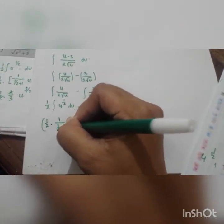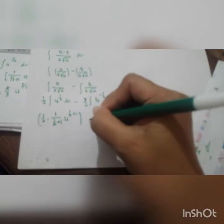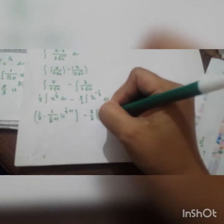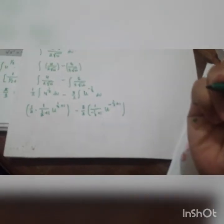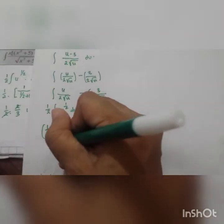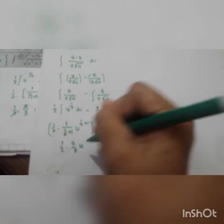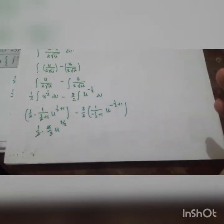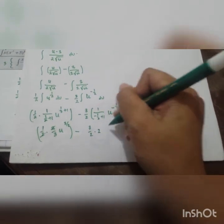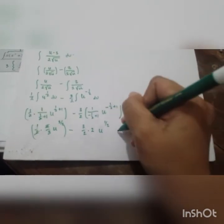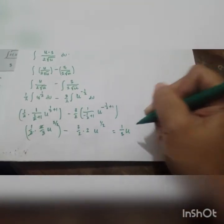Applying the power rule: one-half times (1 over (one-half + 1)) times u^(3/2) minus 3/2 times (1 over (−one-half + 1)) times u^(1/2). This simplifies to one-half times (2/3) times u^(3/2) minus 3/2 times 2 times u^(1/2), giving one-third u^(3/2) minus 3 times u^(1/2). This is the result for Step 3.